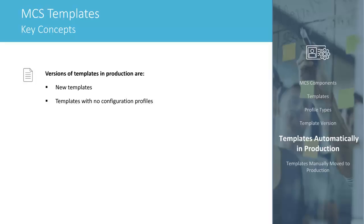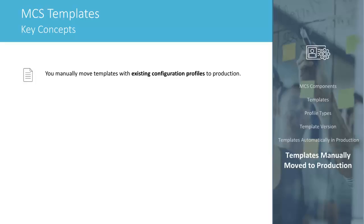Every templates package can have existing, new, or modified templates. When you upgrade CAUIM, a new version of the templates package is deployed to the primary hub. New templates and templates with no configuration profiles automatically move to production. There can be several versions of a template stored on UIM's server, but only one version of a template can be in production. When you create a configuration profile, the version of a template in production at that time remains in production, even when newer versions of templates are available. When you're ready, you can manually move a newer template version into production, and Monitoring Configuration Service will automatically migrate the existing configuration for you.